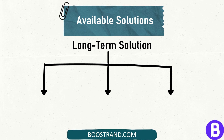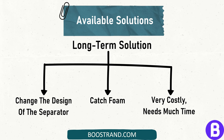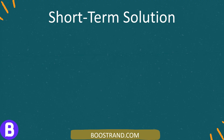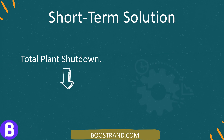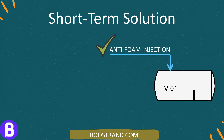The long-term solution is to change the design of the separator. This can be through adding special internals at the inlet and outlet of the separator that catch foam, or even by ordering a larger separator. However, this solution will be very costly and needs much time to implement. The short-term solution is highly important as isolating the separator would lead to a total plant shutdown, causing huge production losses. That's why anti-foam injection is applied.